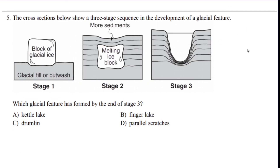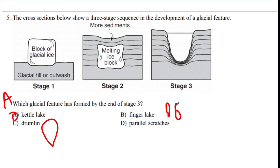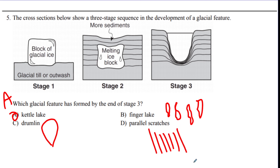A cross section shows a glacial feature — which feature is this? It's going to be a kettle lake. A drumlin is the teardrop shape. The Finger Lakes are the lakes in New York. Parallel scratches are just striations along the rock. So none of those are right — it's a kettle lake.